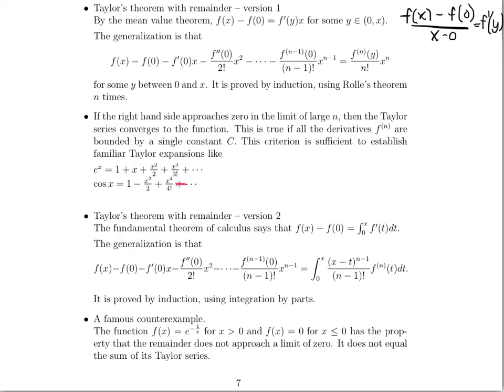There is a very famous counter-example. The function e to the negative 1 over x for x greater than 0, and the zero function for x less than or equal to 0, has the property that the remainder does not approach a limit of zero. This means the function itself does not equal the sum of its Taylor series — quite a problem, because the idea behind Taylor series is that on the interval of convergence you should be converging to the function value, but in this particular case it does not work.